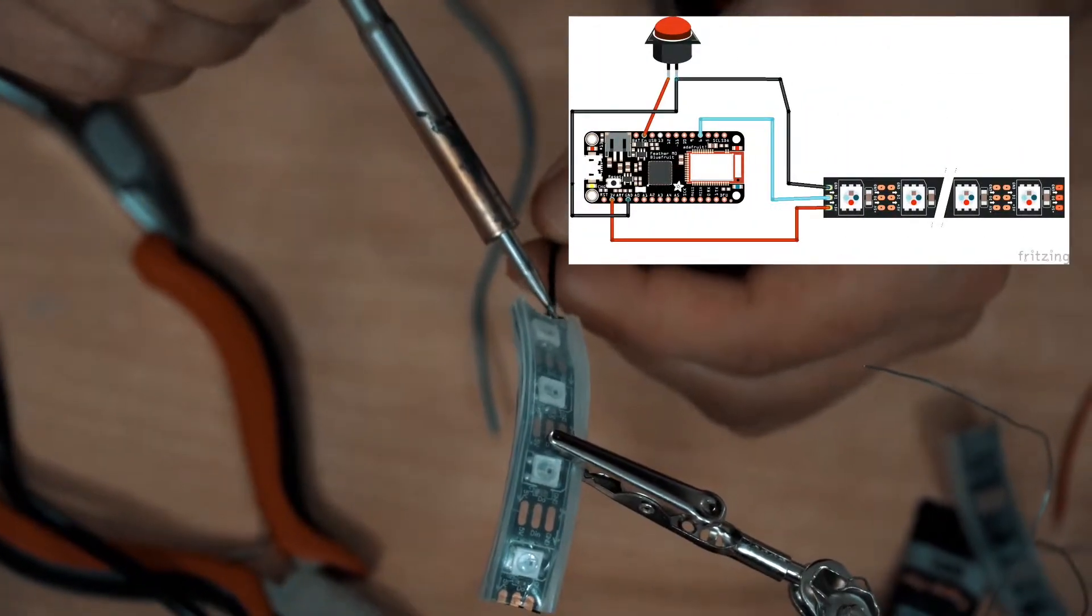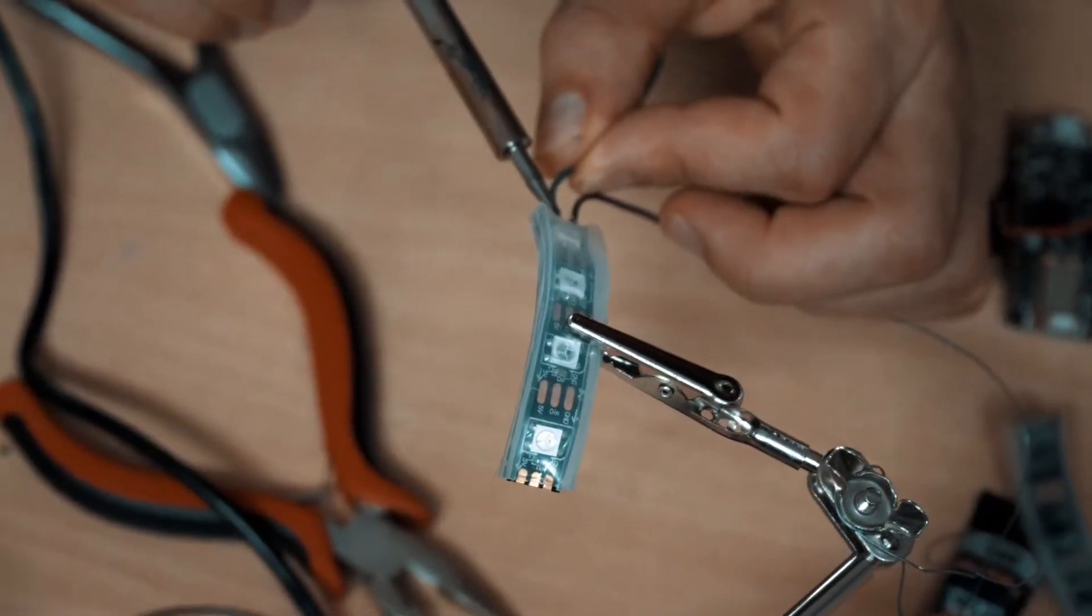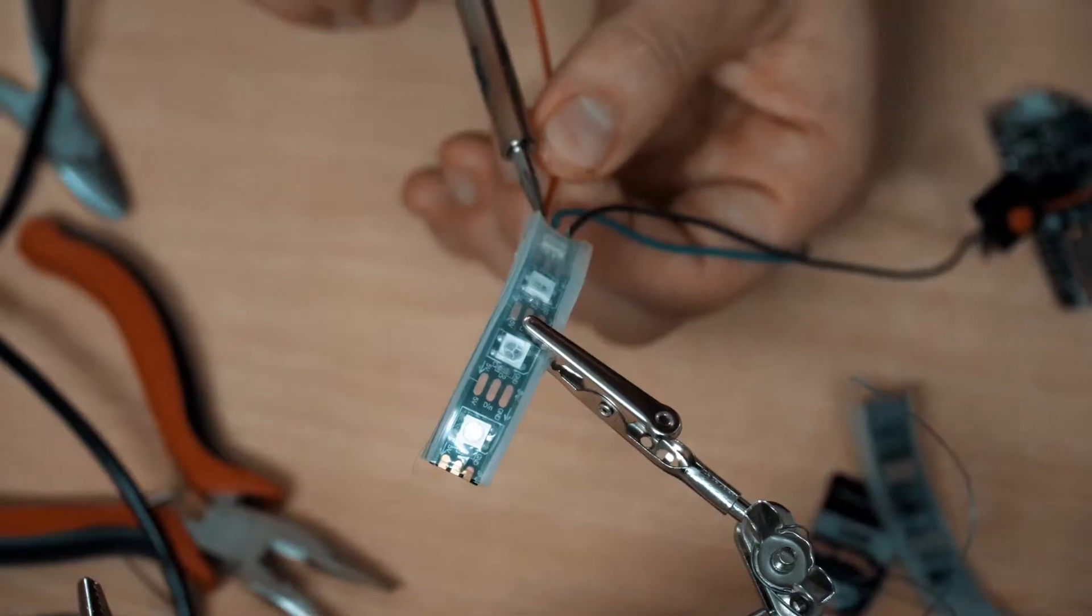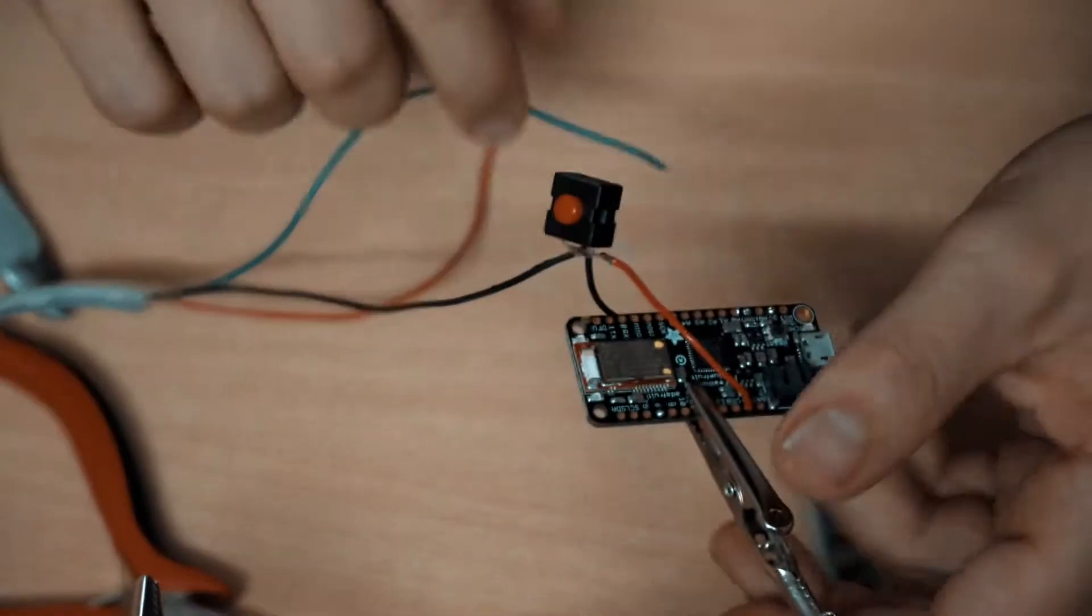The 3 pins of the LEDs: one goes to ground, one goes to V+ (the 3V on feather), the last one goes on output 6. When you do this, don't forget to make a test to verify if it's working well.